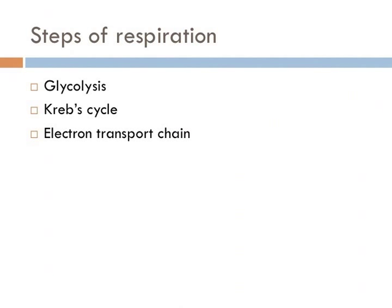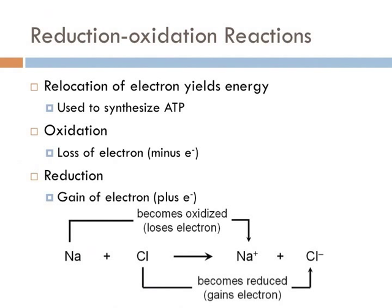There are three steps of cellular respiration and they always occur in the same order: first is glycolysis, second the Krebs cycle, and third the electron transport chain. But first, we have to talk about reduction-oxidation reactions, also known as redox reactions, which describe all chemical reactions in which atoms have an oxidation state changed.